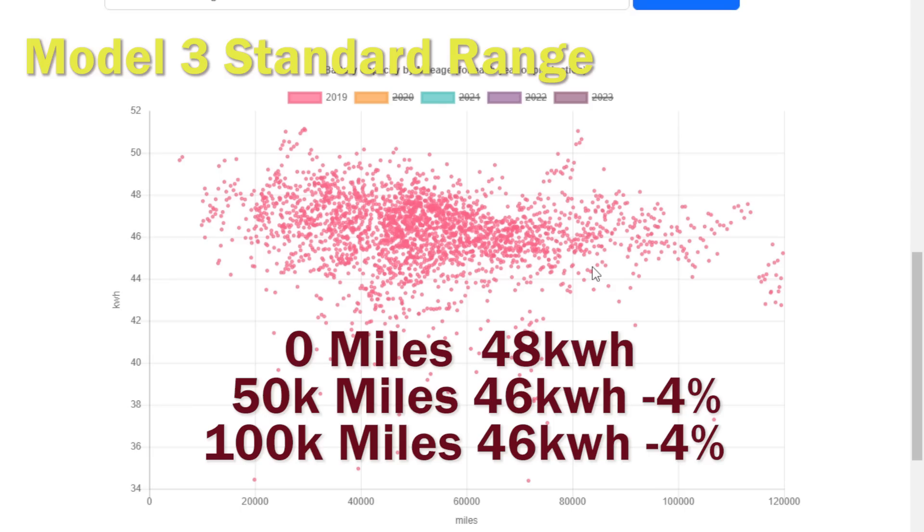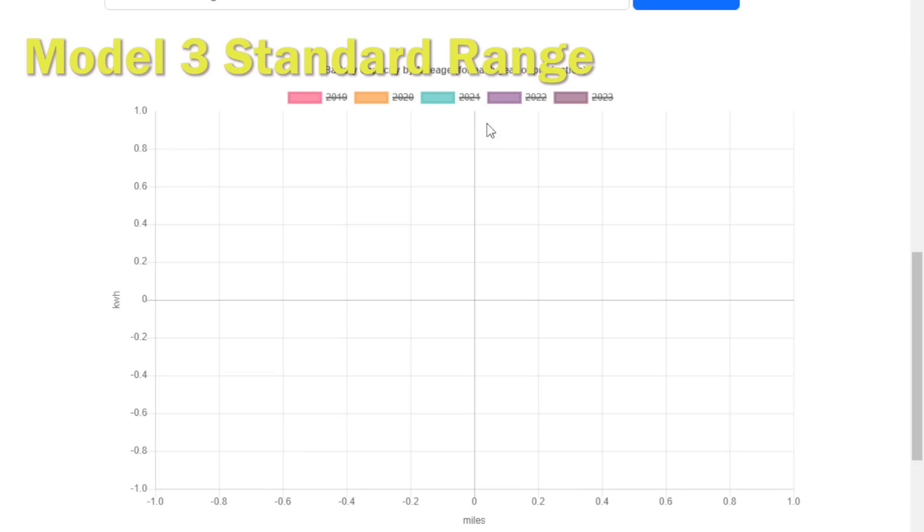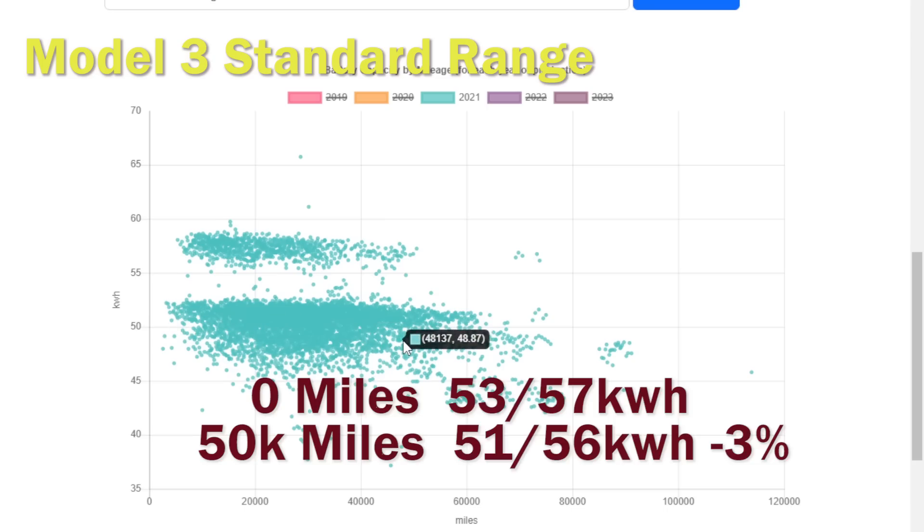If we now jump to a later year, so this time we're going to take a look at 2021, again we see the two different cohorts of data, but actually both cohorts are reasonably good. The 53 kilowatt ones drop to 51 by 50,000 miles, the 57 to 56, and the higher range is actually the introduction of the LFP batteries that we see initially from the China factory. Either way, both these batteries seem to fare really well with pretty low degradation at 50,000 miles.